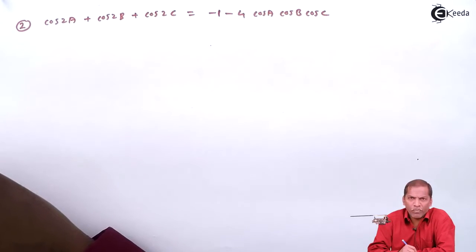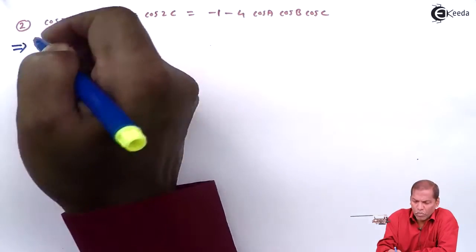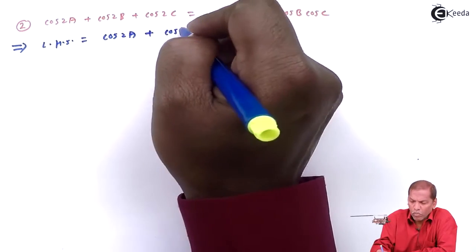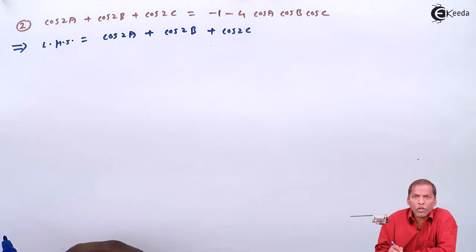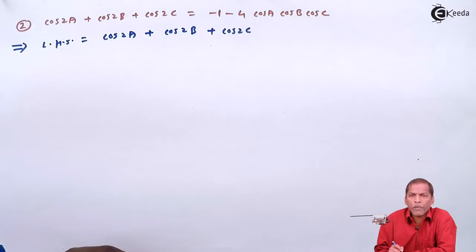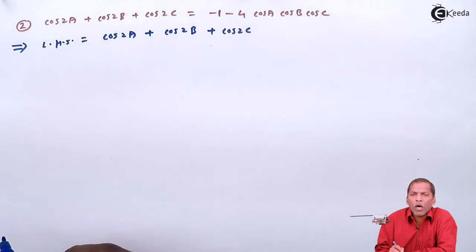We start from LHS. LHS is equal to cos2a + cos2b + cos2c. First of all, let's apply the factorization formula between cos2a and cos2b. That is: cos(c) + cos(d) = 2·cos((c+d)/2)·cos((c-d)/2).